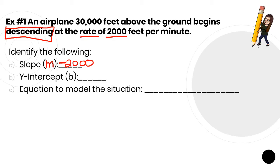We then can look at what's my y-intercept, my beginning value. Well, it's beginning, the plane is beginning at 30,000 feet.